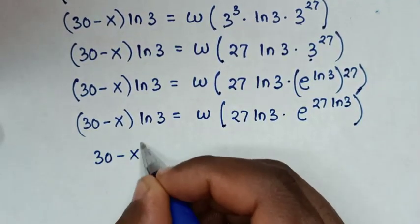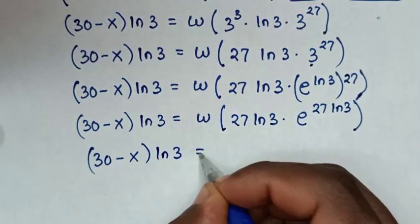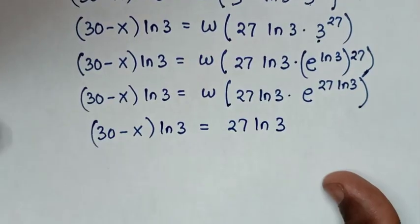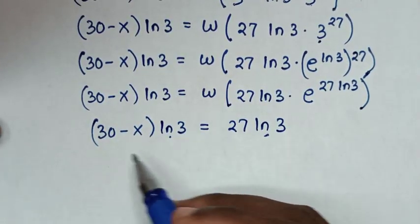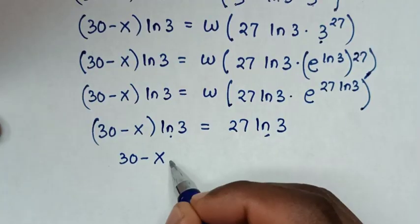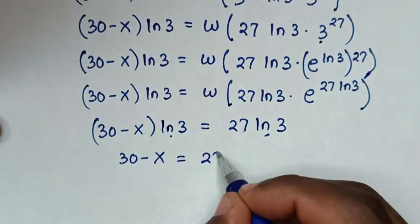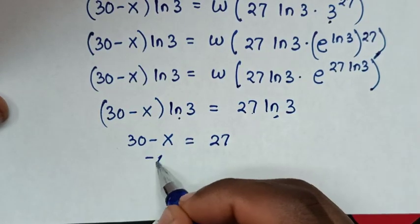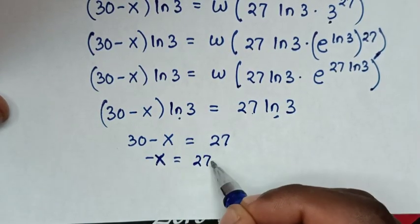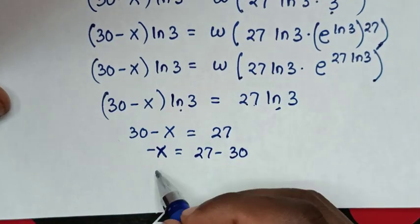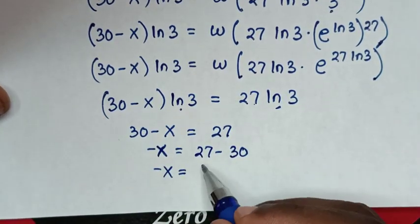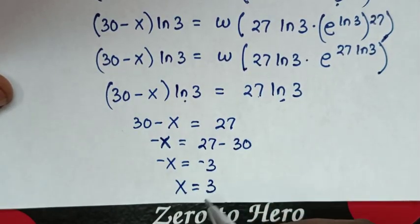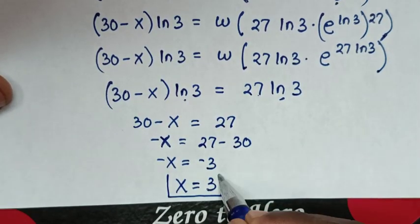So 30 minus x bracket times ln 3 is equal to 27 ln 3. Then in the next step, ln 3 is on both sides so it will cancel. Then it will be 30 minus x is equal to 27. Then we take 30 to the right side: negative x is equal to 27 minus 30, which is negative 3. So x is equal to 3. Therefore this is our final answer.